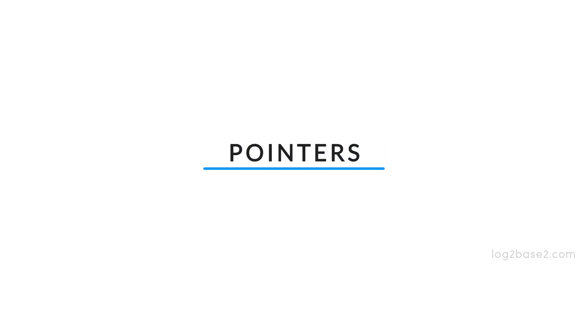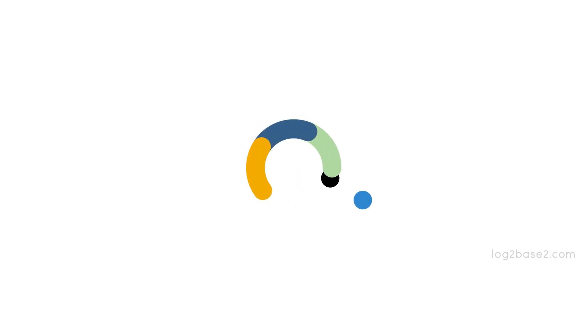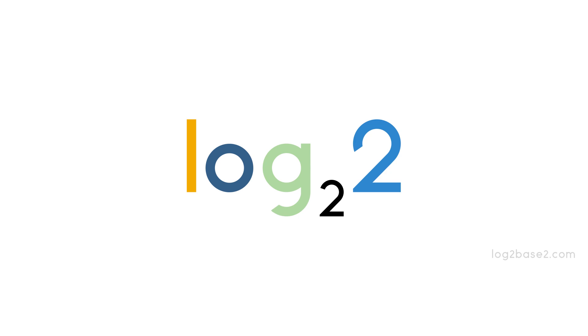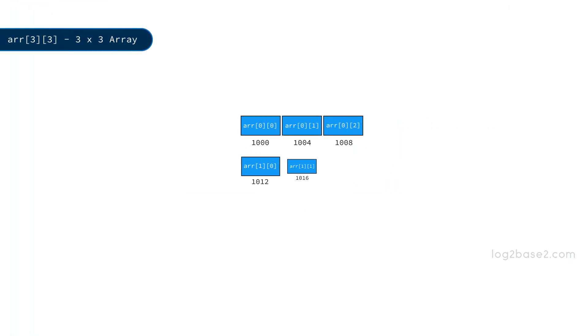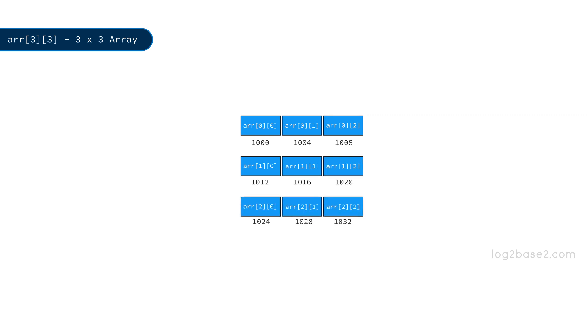Hello friends, in this video we are going to learn the relationship between 2D arrays and pointers. Let us take an example of a 3x3 two-dimensional array. The base address of this array ARR is 1000 and its memory address is an arithmetic progression with common difference of 4, as this is an integer array and the size of an integer is 4.